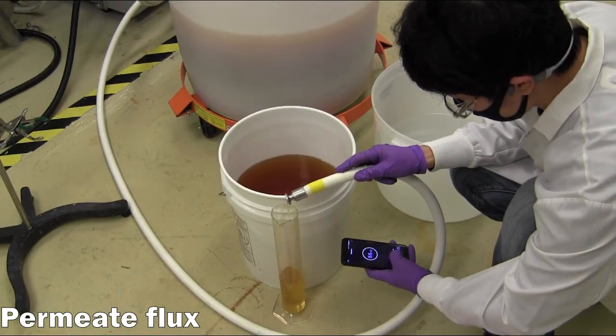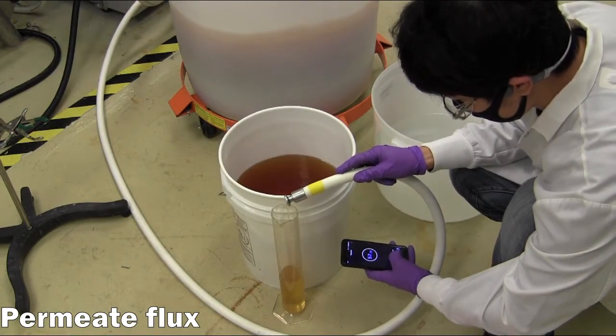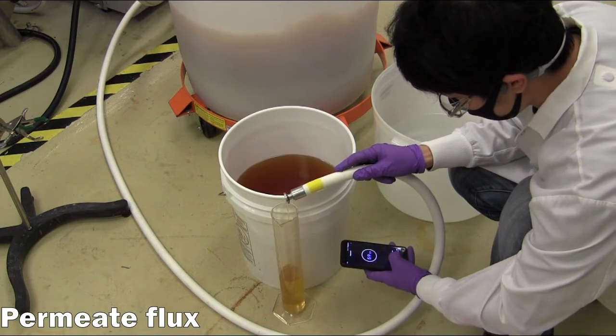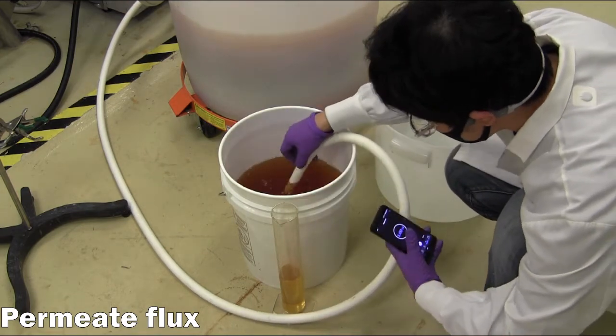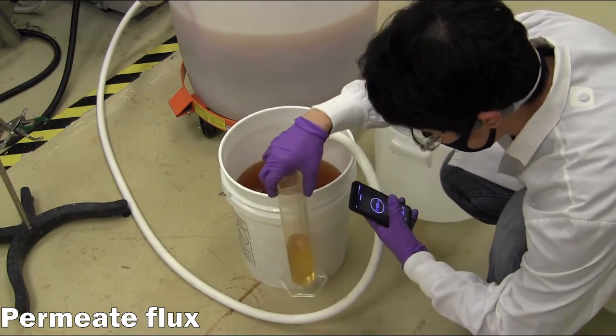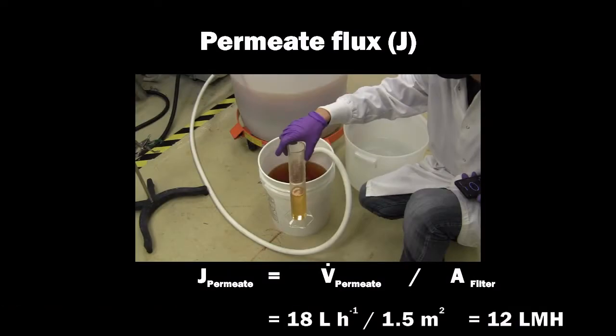The permeate flux is measured throughout the processing to monitor potential fouling of the membrane. As before, the permeate stream is collected over a given time interval and converted to a flux value using the membrane filter area. Here, the permeate flux is measured at 12 liters per square meter hour.